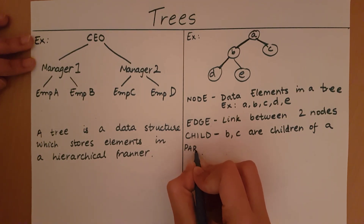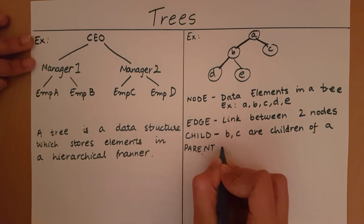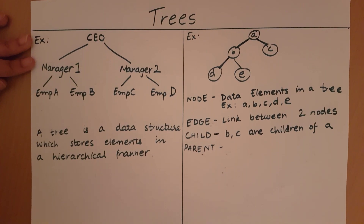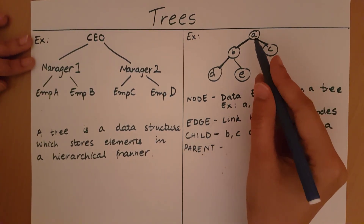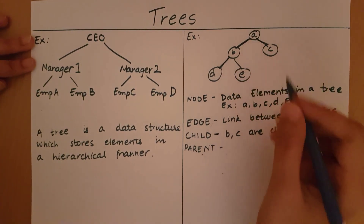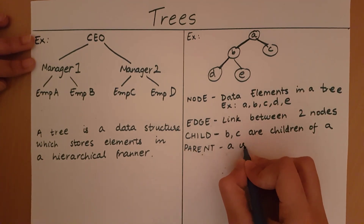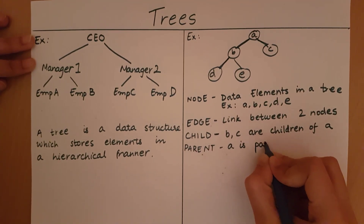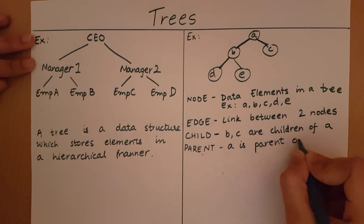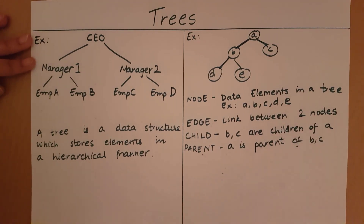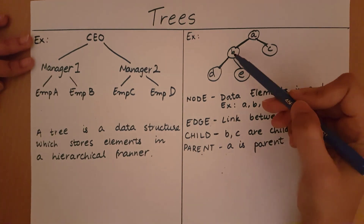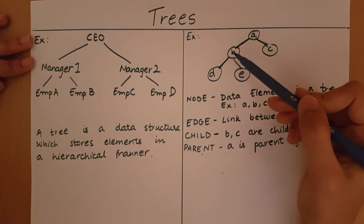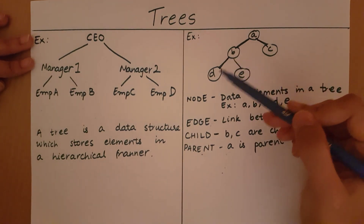Once we have seen child nodes, it will be easy to understand what a parent node is. If B and C are going to be the children of A, it means A is going to be the parent of B and C. If a particular node branches out to subsequent nodes, that node is going to be the parent of those subsequent nodes. So B branches out to D and E, so B will be the parent of D and E.